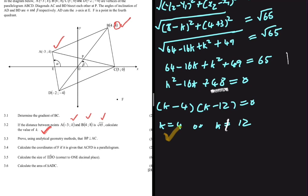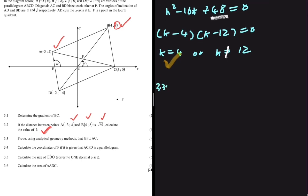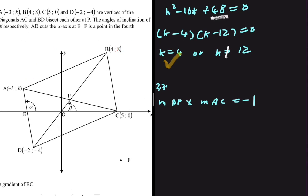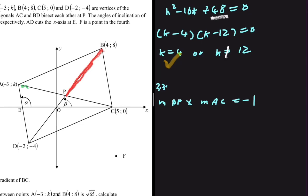Moving to 3.3, we need to prove using analytical geometry that BP is perpendicular to AC. To prove this, we must show that the gradient of BP multiplied by the gradient of AC equals minus 1. Looking at our sketch, we have all coordinates of A and C to find the gradient of AC easily.